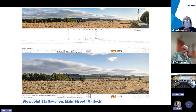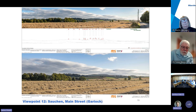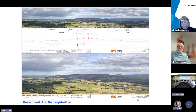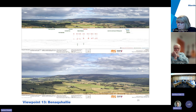Slide 19 shows viewpoint 12, approximately seven kilometers north of the nearest turbine. We can see the existing landscape, the theoretical visibility of turbines highlighted in red, and the photomontage showing existing landscaping providing a degree of screening for at least two turbines. It is a key view for local visual impact upon surrounding hills, with some existing wind energy presence in this location.